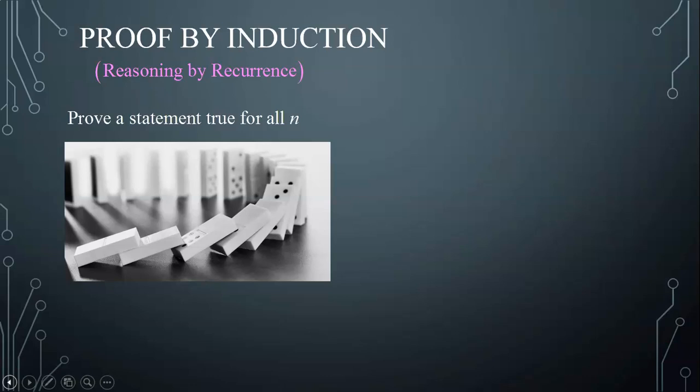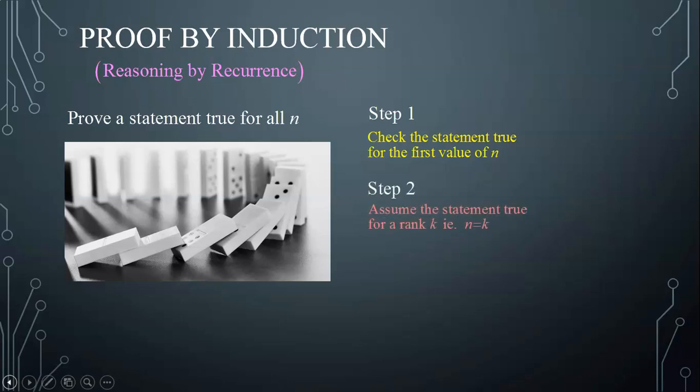That is because in the first step, you are required to check that the statement is true for the first value of n. Then the second step consists of assuming the statement true for rank k, which means you are assuming the statement true for n equal to k, where k could be any integer.